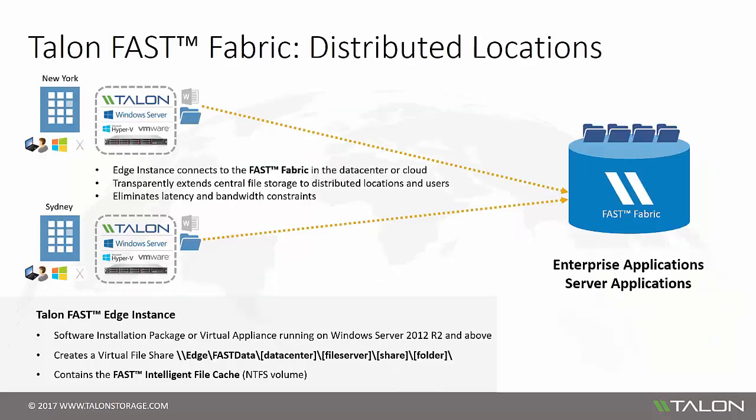One of the key parts of the Fast Fabric are the distributed locations — field offices, job sites, regional facilities, etc. These distributed locations have their own unique Fast Edge instance, which connects to the Fast Fabric in the data center or in the cloud. The Fast Edge transparently extends the central file storage to the distributed locations and the users at those sites.